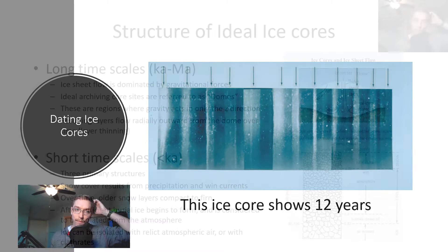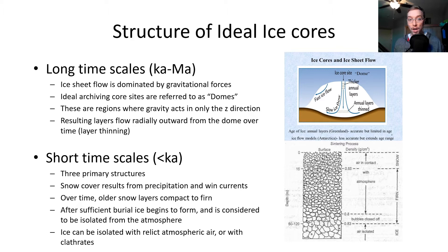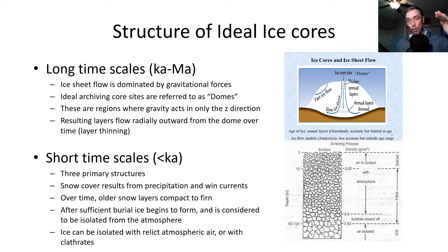The structure of ideal ice cores: for long time scales, we're looking at ice sheet flow dominated by gravitational forces, getting us thousands to almost millions of years into the past. Ideal archiving core sites are referred to as domes — regions where gravity acts only in the z direction, meaning only compression. Resulting layers flow radially out from the dome over time, thinning toward the edges. Things like the Greenland and Antarctica ice sheets are perfect examples of these ice domes used for ice core dating.